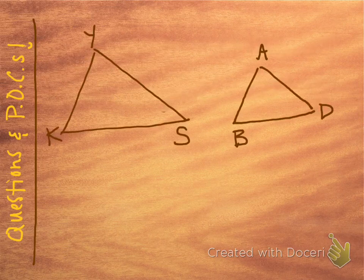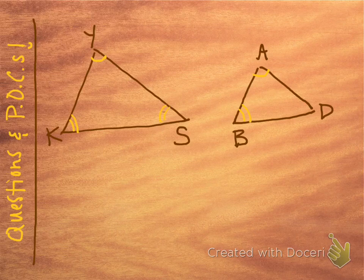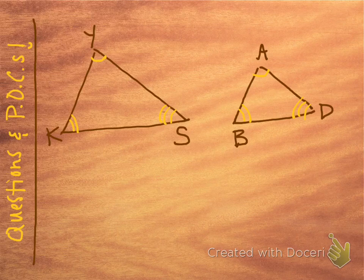Let's look at an example. Suppose that these two triangles are similar. When you've got similar shapes, the corresponding angles are congruent. So Y corresponds with A — those are congruent. K corresponds with B — those are congruent. S corresponds with D — those are congruent. The symbol for similar is just one little wiggle, kind of like our congruent symbol but without the equal sign.